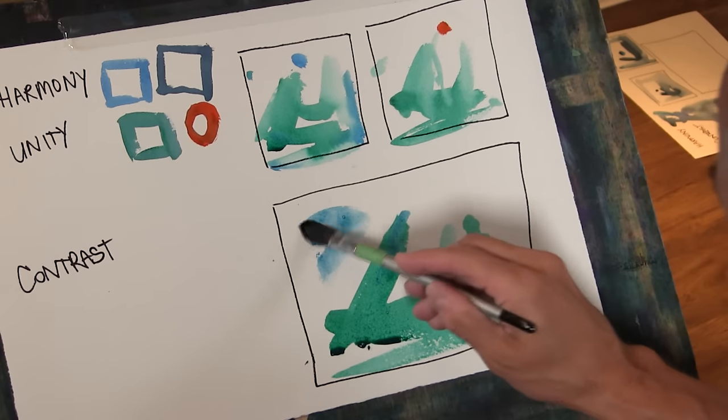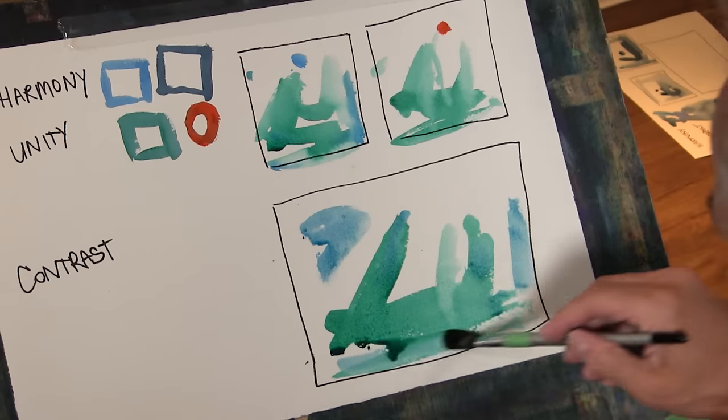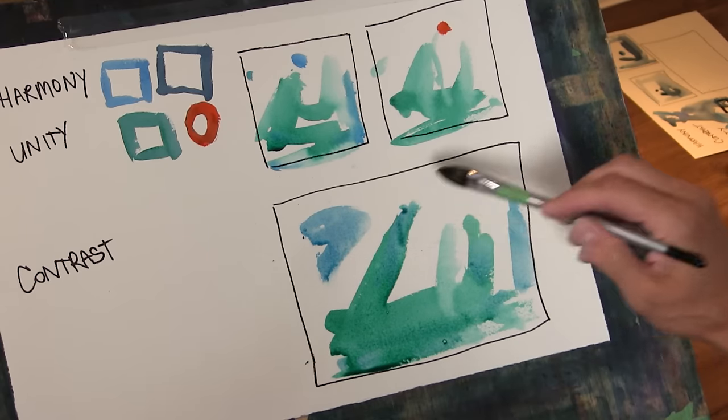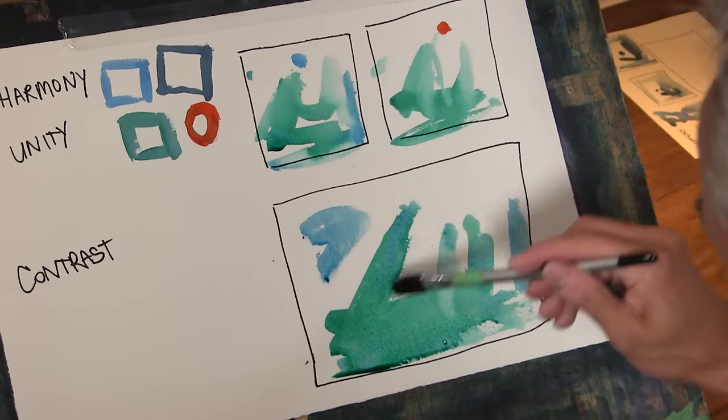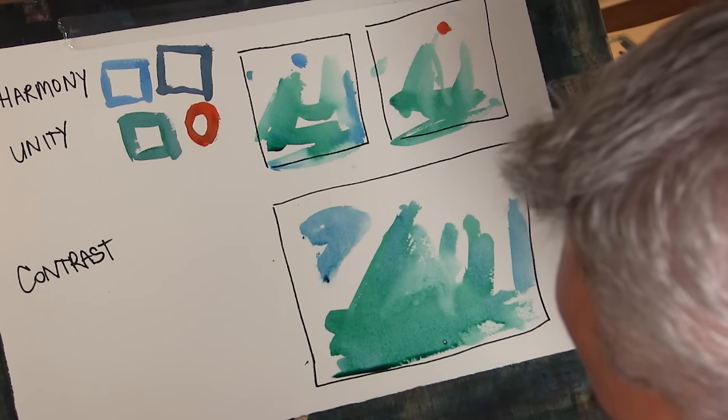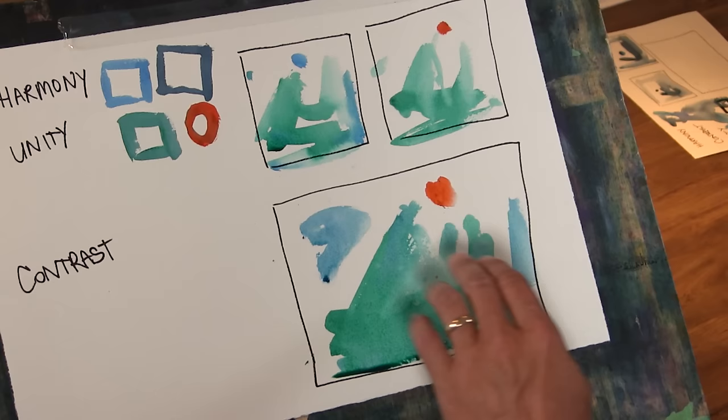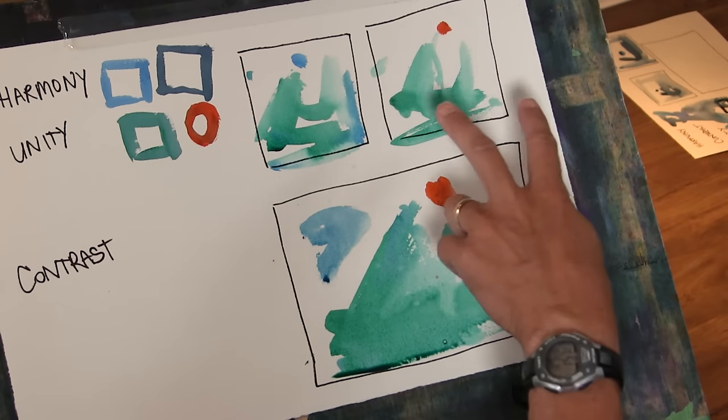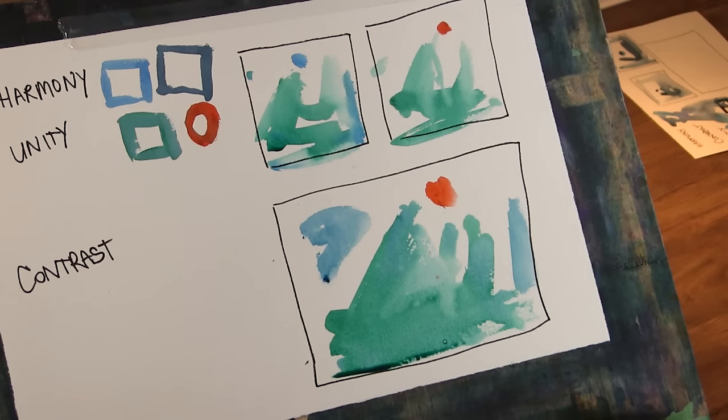Now to make the blue belong, what I need to do is echo that blue in a few other places so it's not a discordant color note. Now we'll come in with our stroke of orange again. Draws the eye up here so we're at the same place we were. What we need to do now is echo that orange's influence in other areas of the painting.